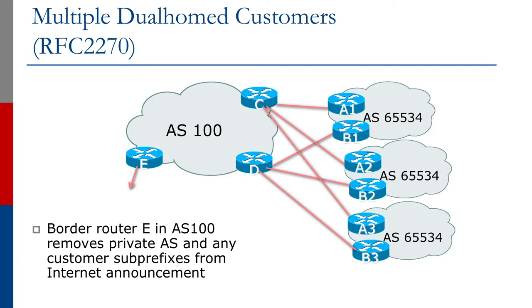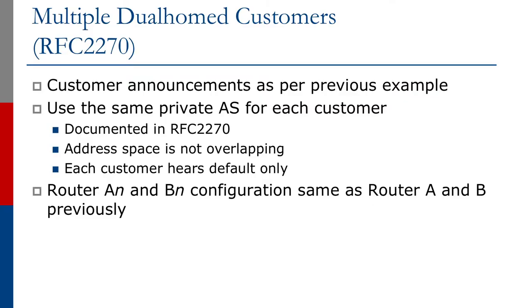So how do we handle this? The customer announcements are exactly the same as in the previous example — we follow the same techniques. Using the same private AS, indeed the same AS, is perfectly fine. In fact, the IETF RFC 2270 documents this particular example, as was used by some network operators back in the late 90s.